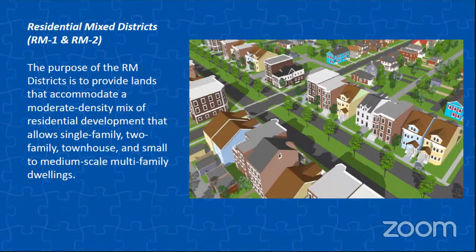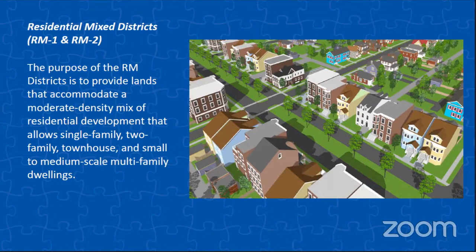Our residential mixed districts, RM1 and RM2, are very similar to our current RG1 and RG2 districts — a general mixed residential district. The purpose of these districts is to provide lands that accommodate a moderate density mix of residential development that allows single family, two family, townhouse, as well as small and medium scale multi-family dwellings. Density requirements still apply as well as lot coverage, so anything with multiple units would have to meet density requirements for the land as well as lot coverage, height, and any other development requirements.